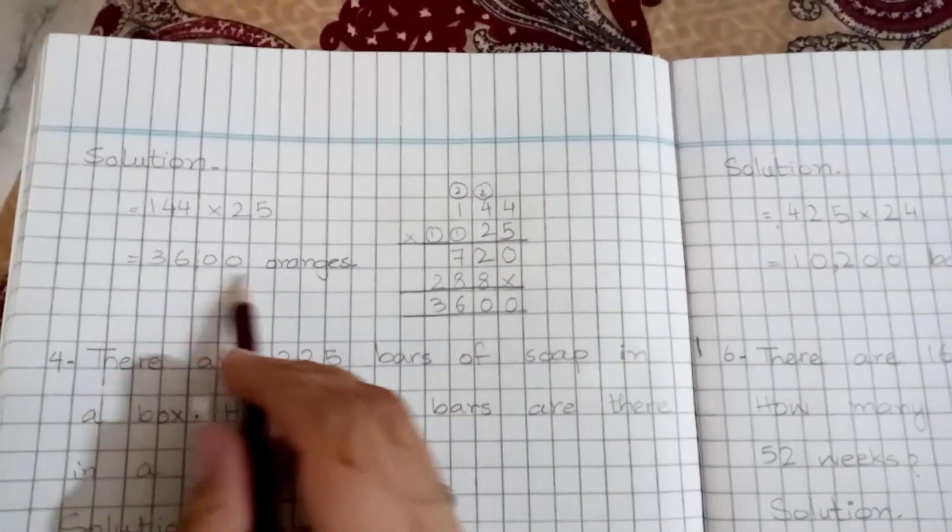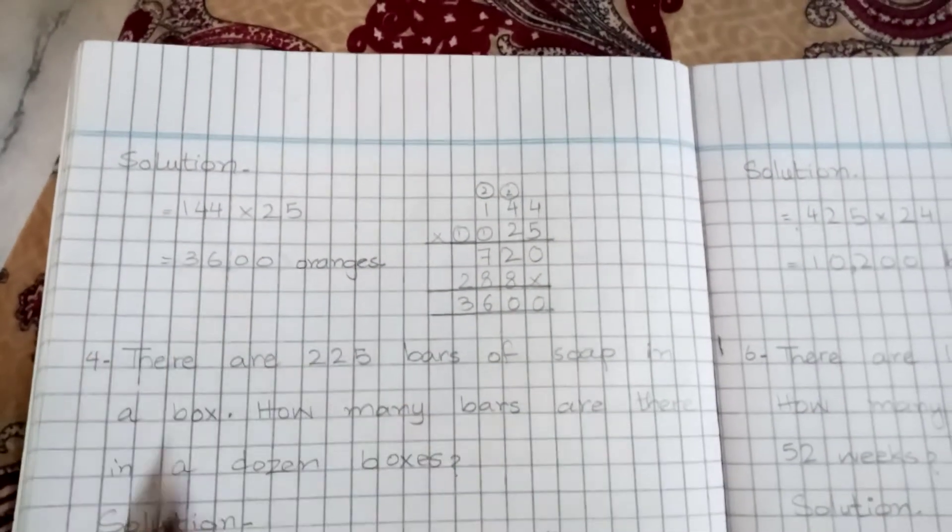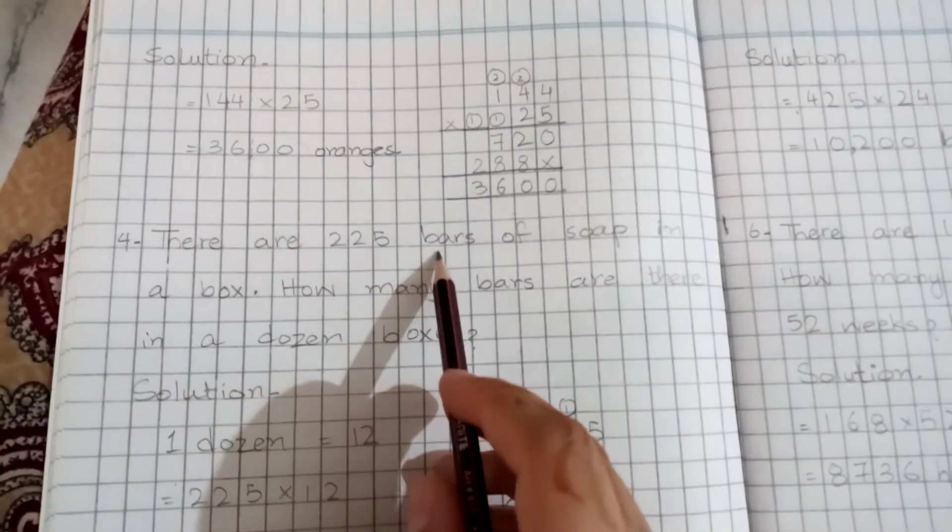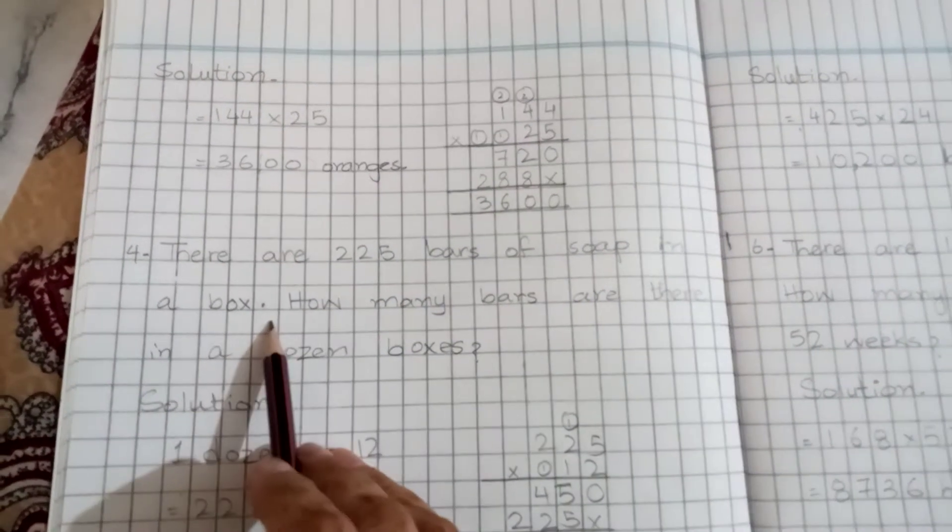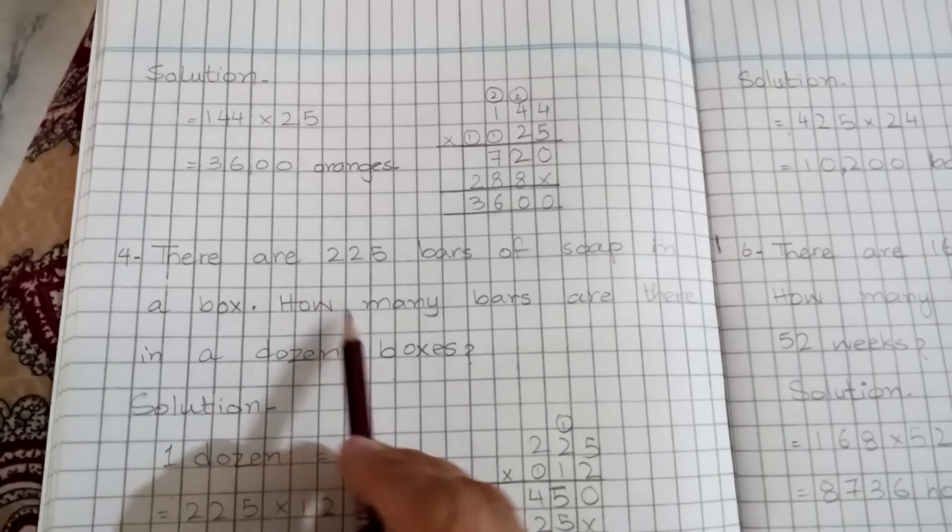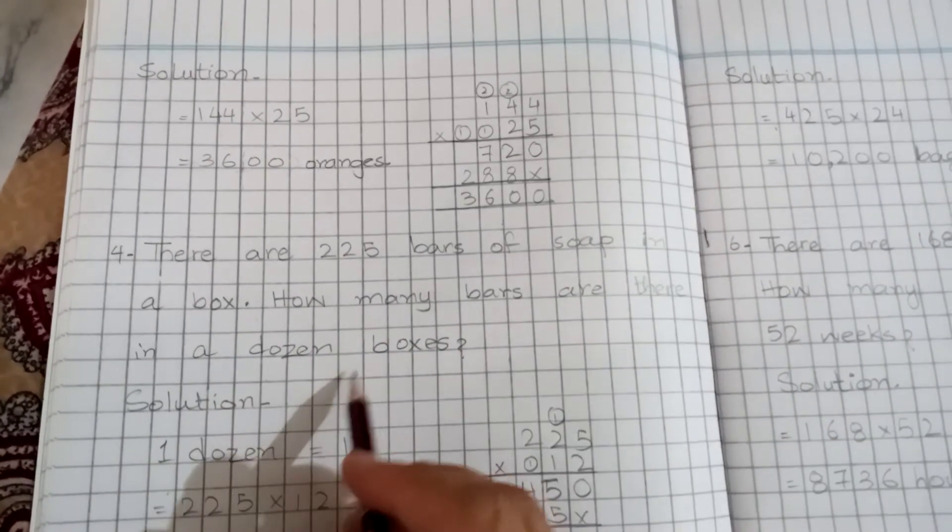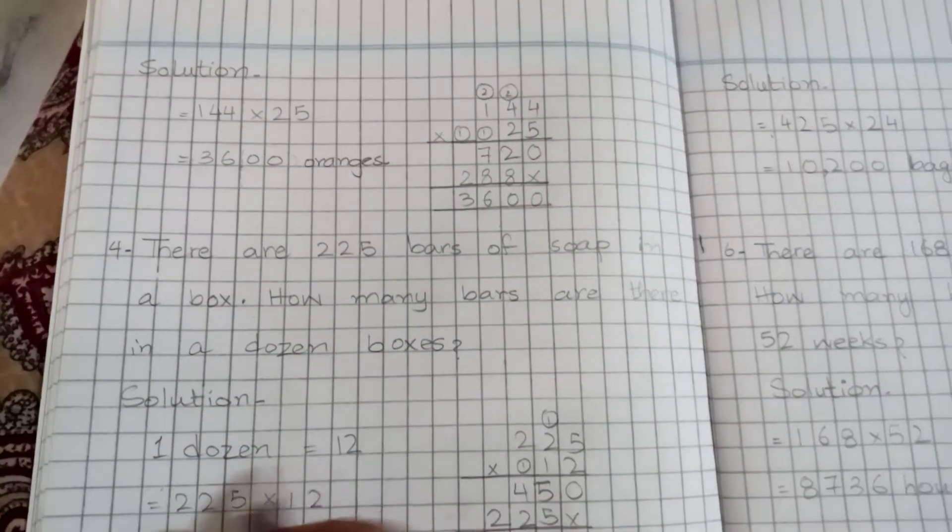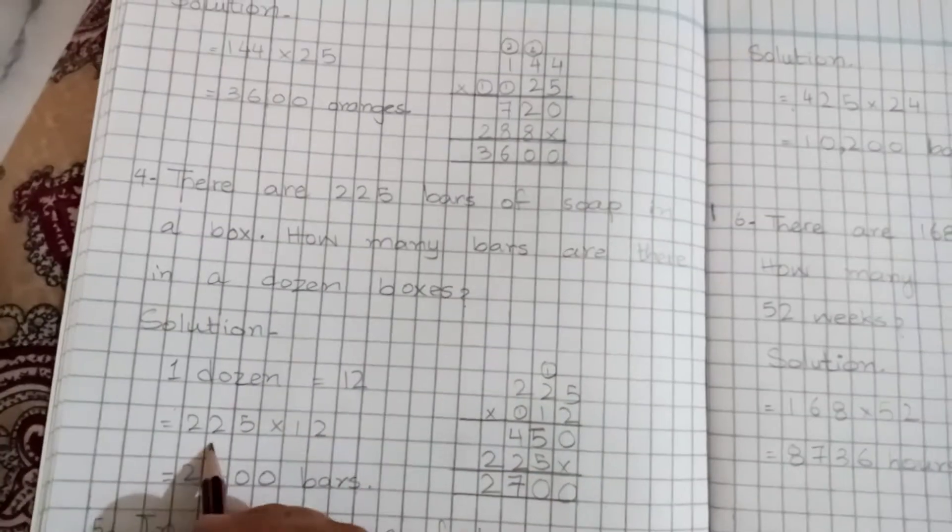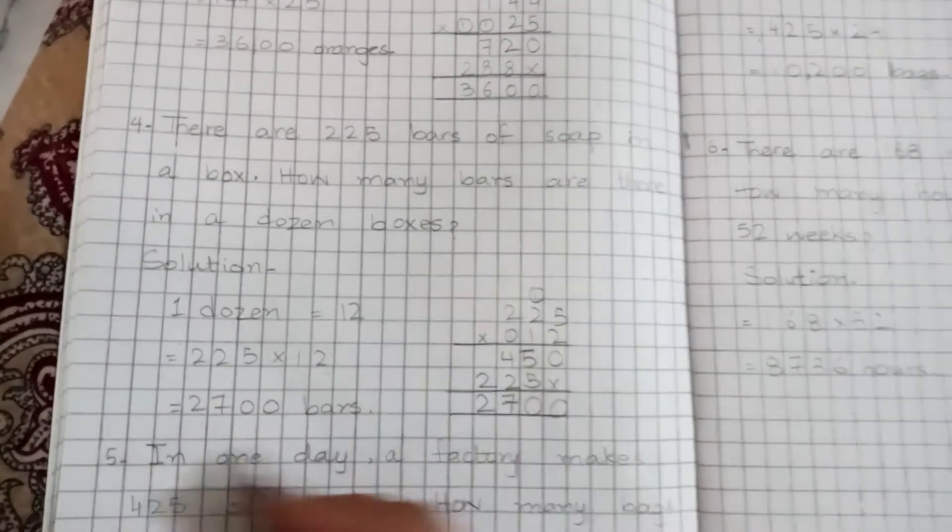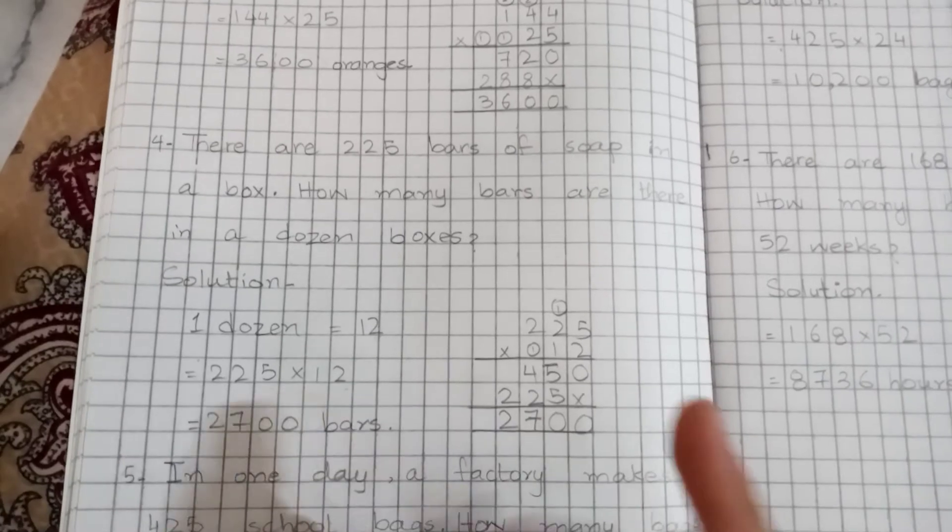How many oranges are there in one box? In a box, how many bars are there in a dozen box?